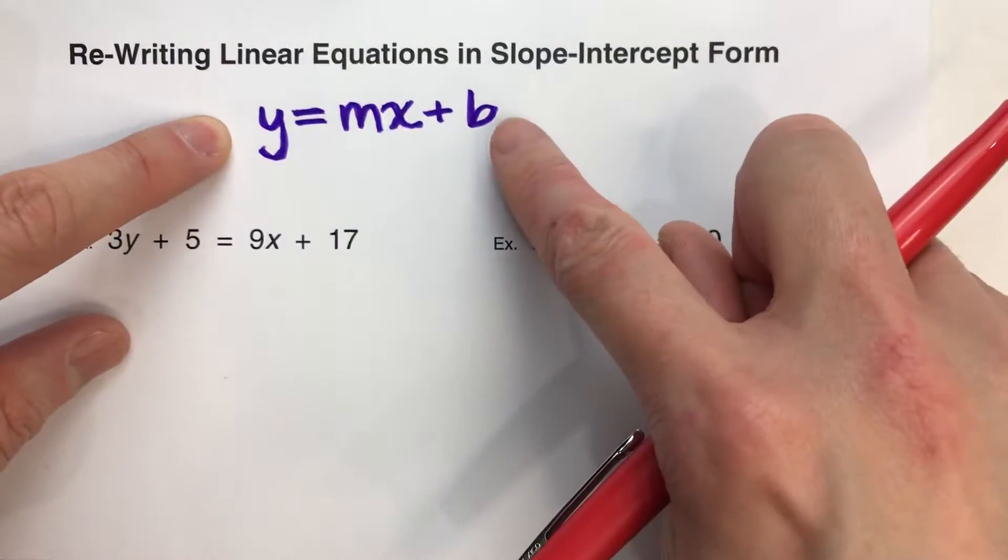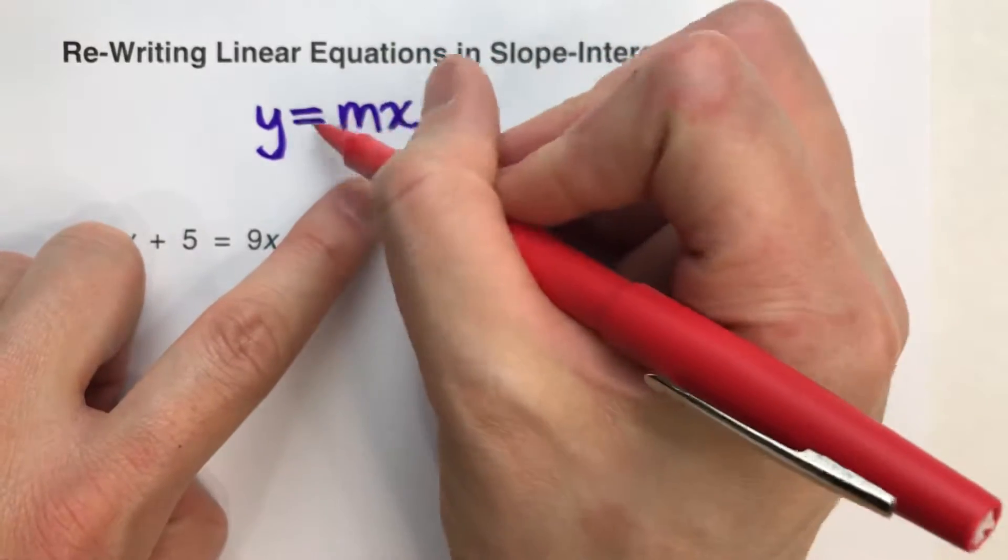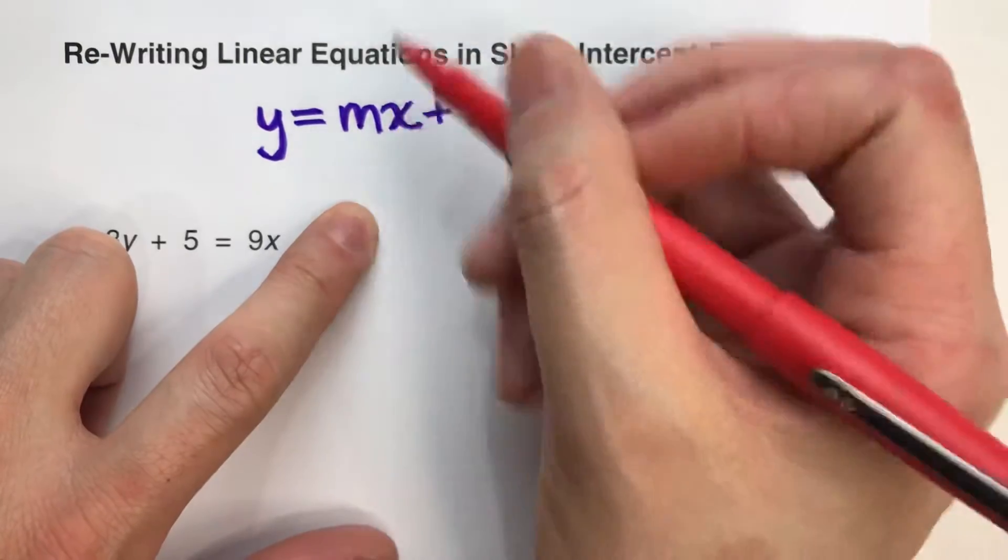It's an equation for a line, and it's called slope-intercept form because this equation, y equals mx plus b, tells you what the slope and the y-intercept are of the line.